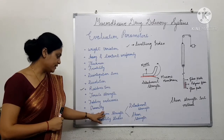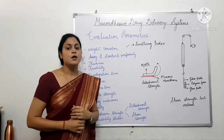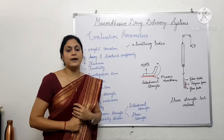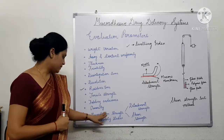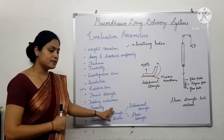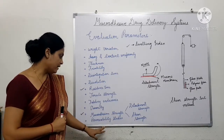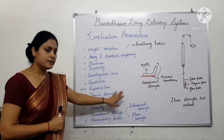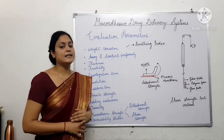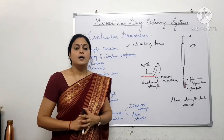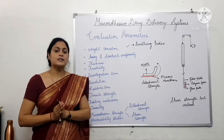Viscosity is a very important evaluation parameter required to evaluate semi-solid dosage forms. For calculating viscosity, a Brookfield viscometer is used. For muco-adhesive strength, we have already discussed. Permeability studies are done with the help of various diffusion cells, for example Franz diffusion cell.